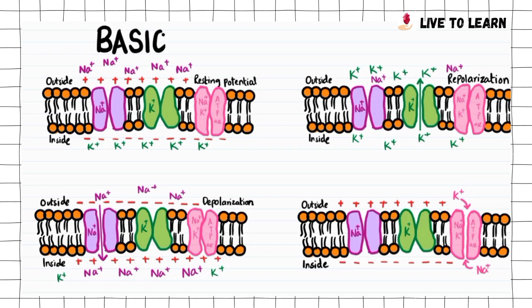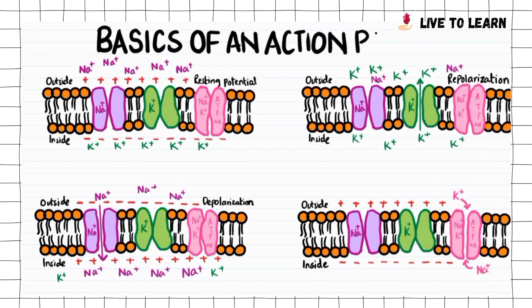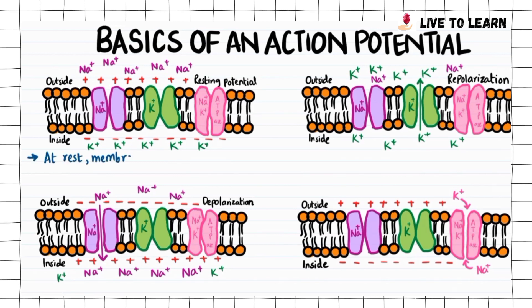As we know, action potentials are brief changes in membrane potential. When stimulated, different ions move across the membrane — like sodium, potassium, and calcium in the case of cardiac muscle. At rest, the membrane potential is negative.